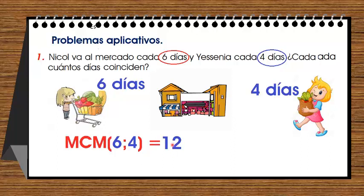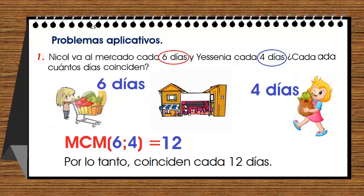Quiere decir que cada doce días Nicole y Yesenia van a ir juntas. Concluimos que coinciden cada doce días.